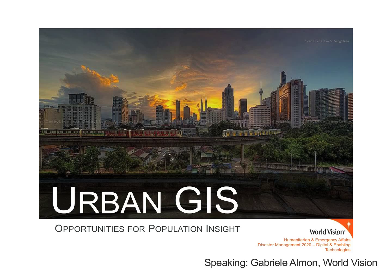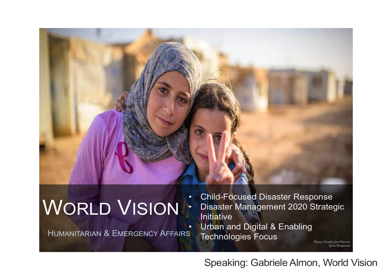Let me introduce you to World Vision. We're a child-focused organization working in about 100 different countries, and our Humanitarian and Emergency Affairs Department supports local communities throughout the globe in all phases of the disaster management cycle. Seeing that the world is going through rapid change, and so is disaster response, our leadership has launched a strategic initiative called Disaster Management 2020 to examine those forecasted changes. Two of those areas are urban response, given the rapid urbanization the world is experiencing, and digital and enabling technologies like GIS.